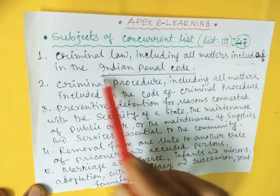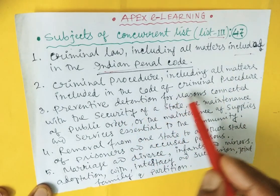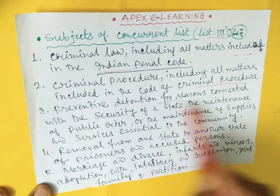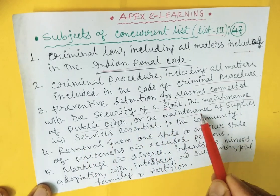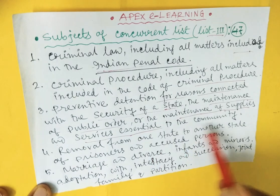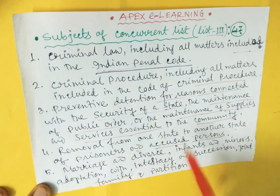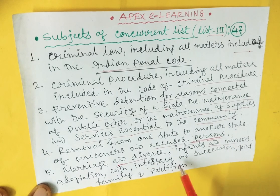Under the concurrent list: criminal procedure, including all matters included in the code of criminal procedure. Preventive detention for reasons connected with the security of the state and maintenance of public order and maintenance of supplies and services essential to the community. Removal from one state to another state of prisoners and accused persons. Marriage and divorce. Infants and minors. Adoption, intestacy, and succession. Joint family and partition.